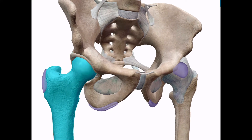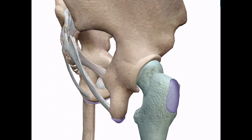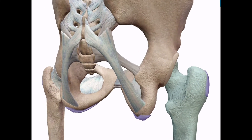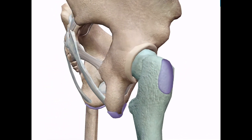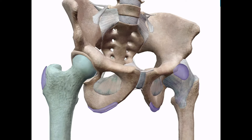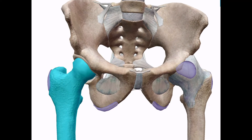Next is the femur — basically the ball of the hip. The femur is the moving portion that flexes, extends, abducts, adducts, and rotates. Now let's talk muscular anatomy.